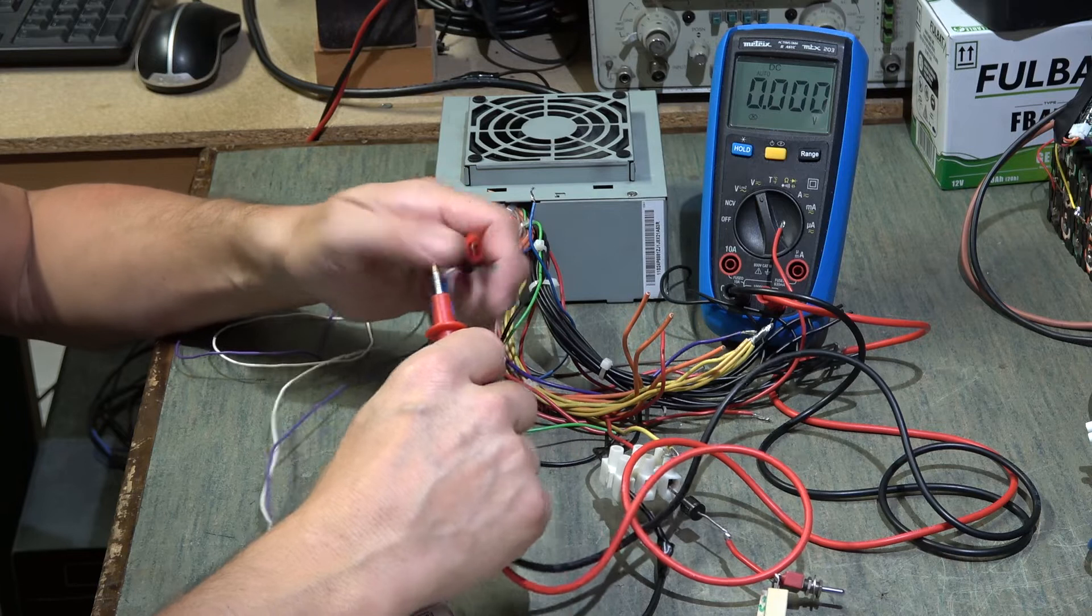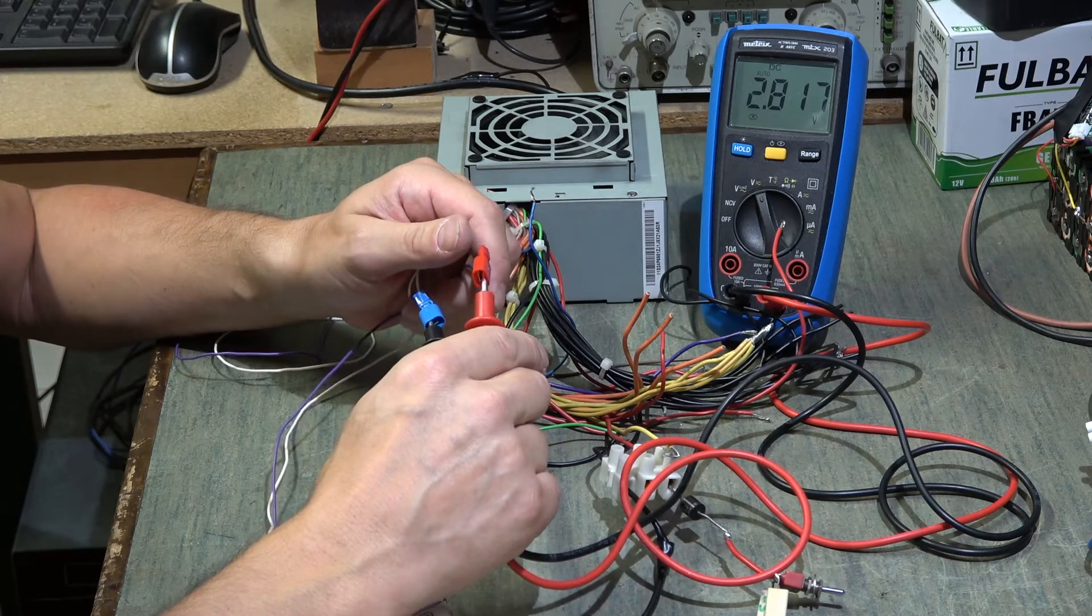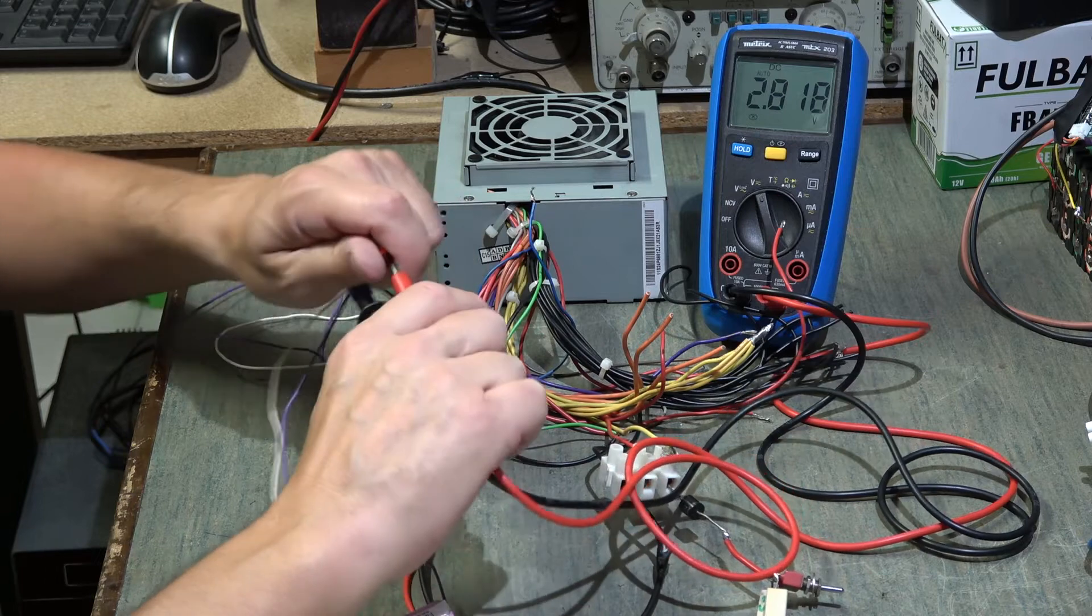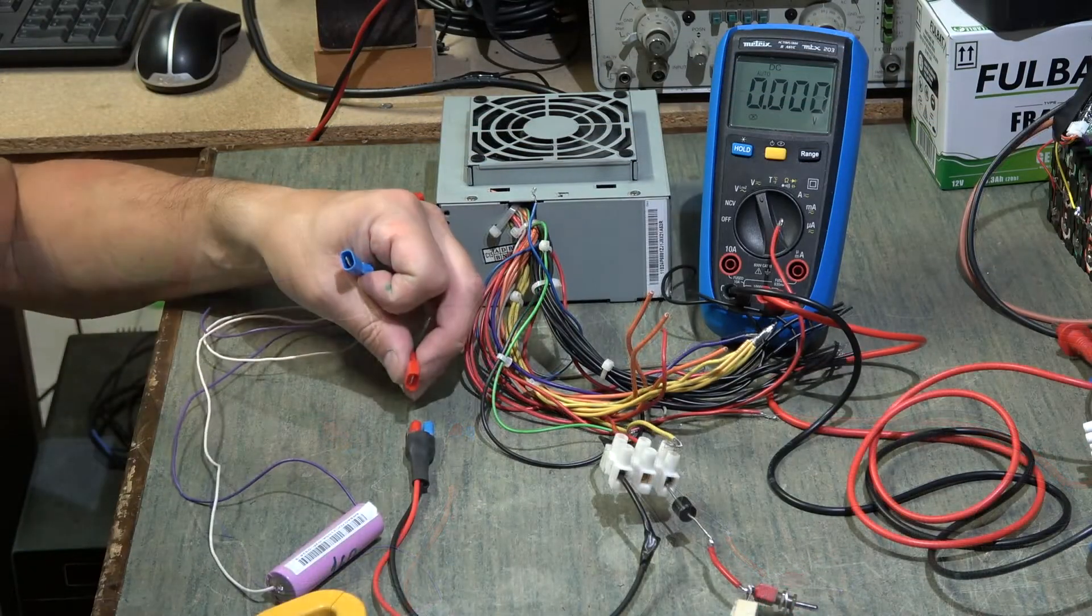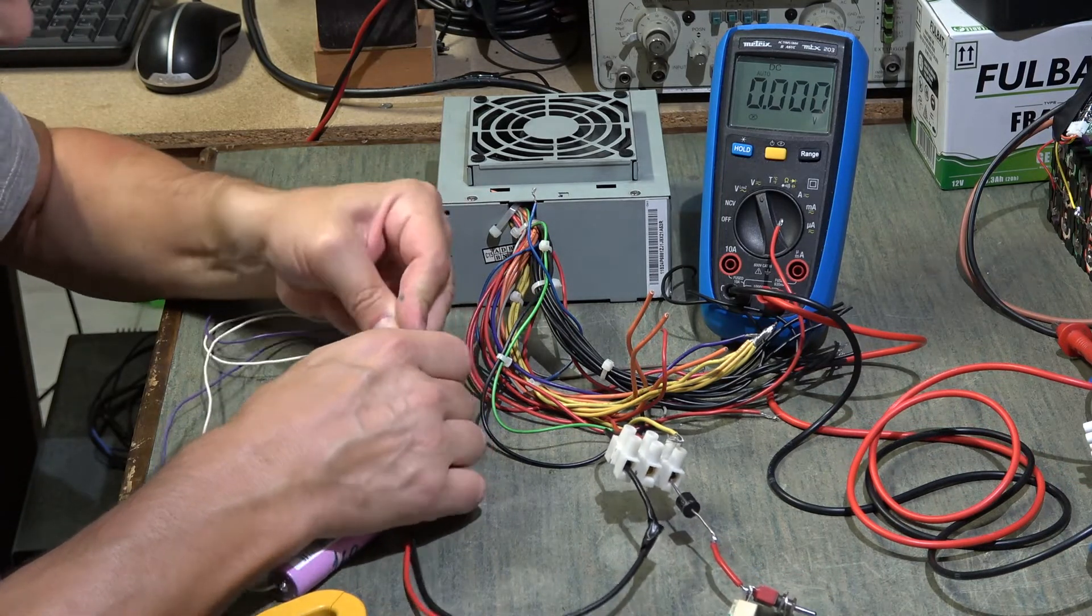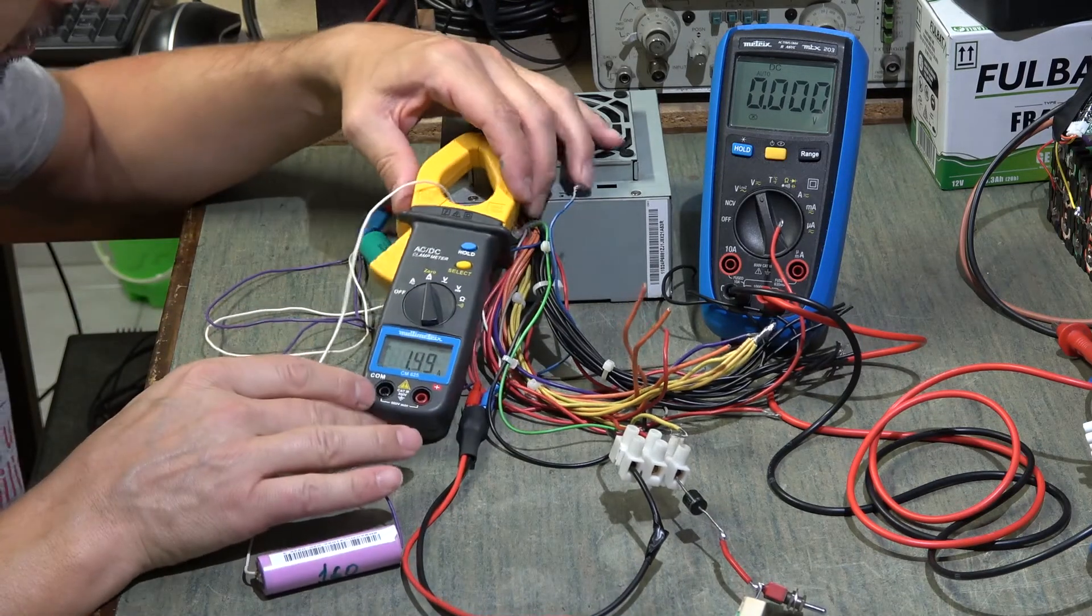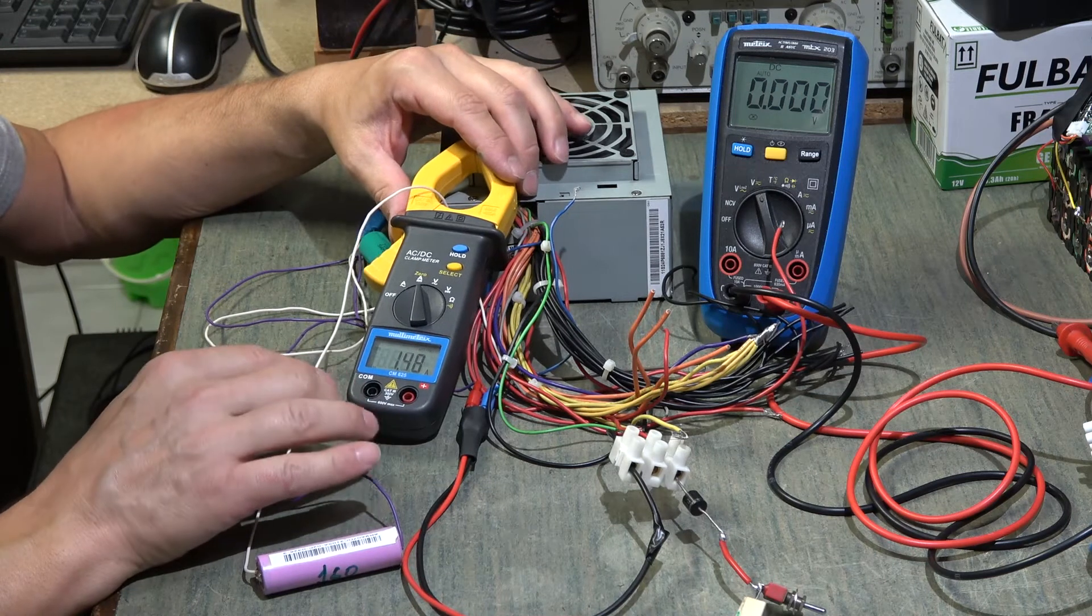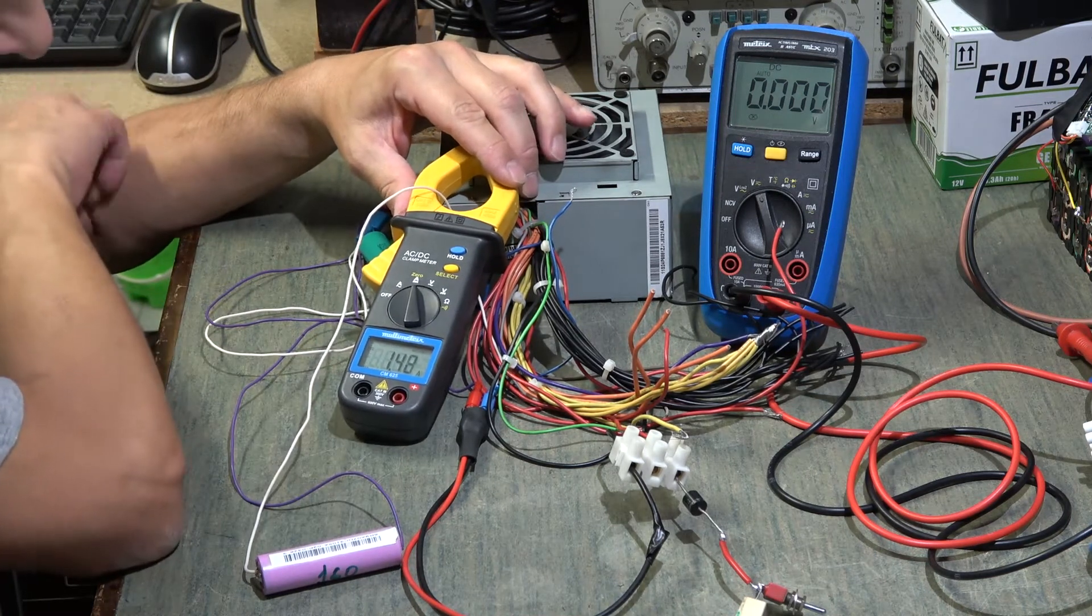This is 2.8 volts. We start from that. Now I touch the battery and see how many it will absorb. We are at 1.5 amperes because now I have not let it go down to 2.5V - at 2.5V it starts from 2 amperes.